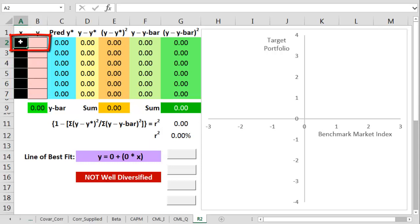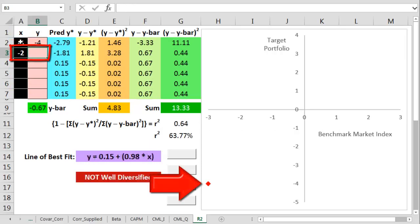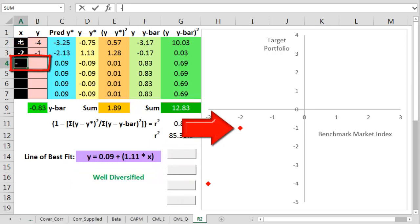If the benchmark is minus 3%, the target gets back minus 4%. If the benchmark is minus 2%, the target return is minus 1. If the benchmark is minus 1, the target's minus 2.